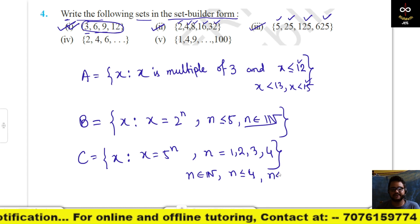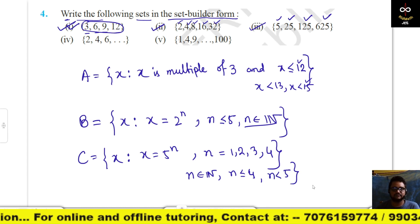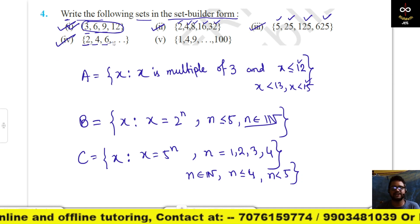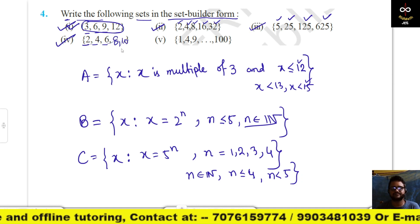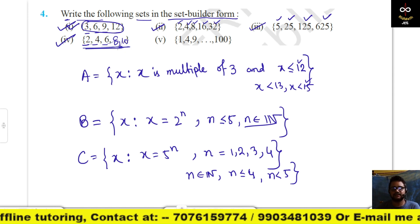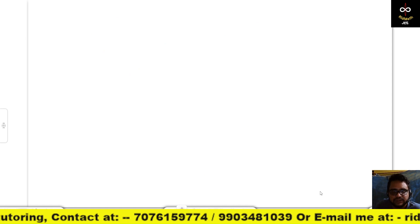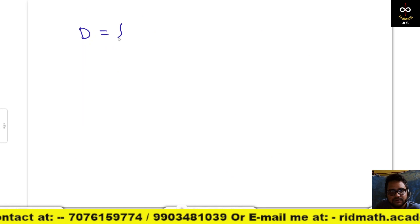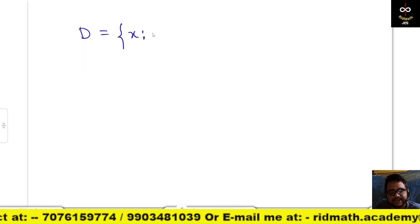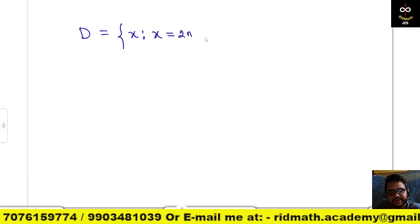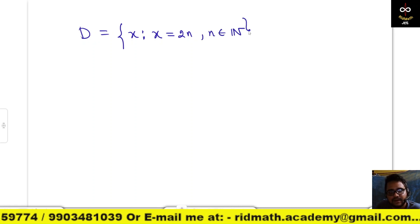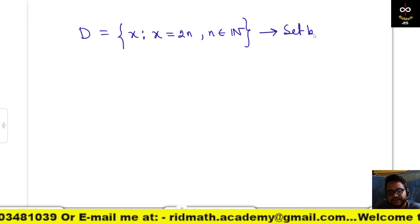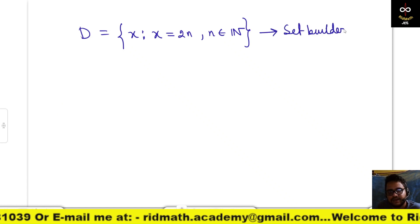Next, {2, 4, 6, 8, 10, 12} — these are all even integers. So D = {x : x = 2n, n ∈ ℕ}. This is the set builder form.